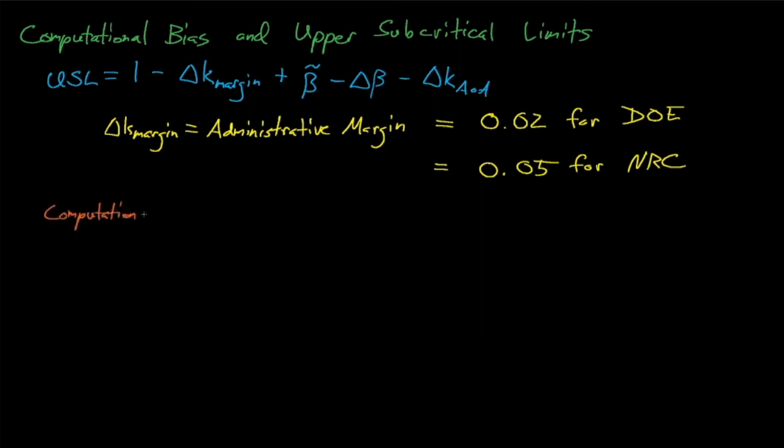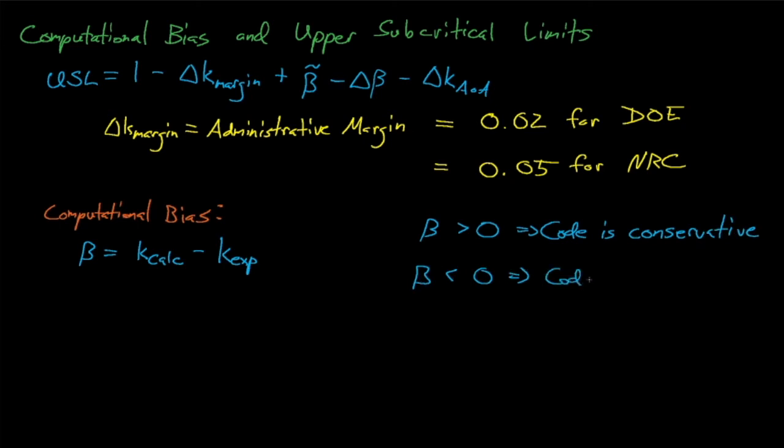The computational bias for a code is defined as the difference between the code's estimate for a system's eigenvalue and that system's true eigenvalue as determined by experimentation. A bias that's greater than 0 suggests that the code is being conservative and overestimating the eigenvalue of the system, while a bias that's less than 0 suggests that the code is underestimating the eigenvalue. A positive bias is usually a good thing since it suggests that we don't need to worry about computational bias from our code.